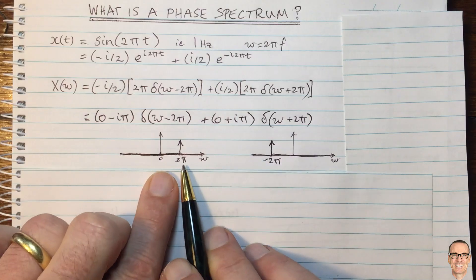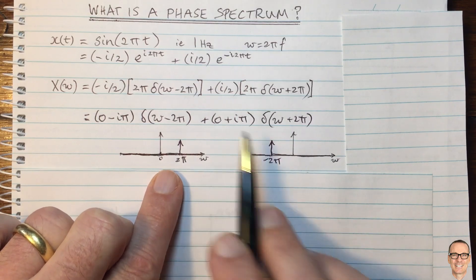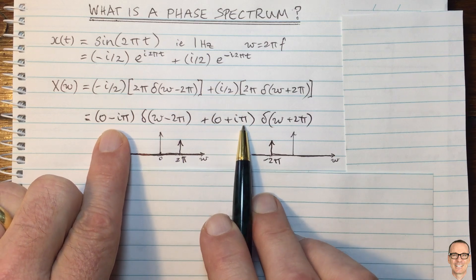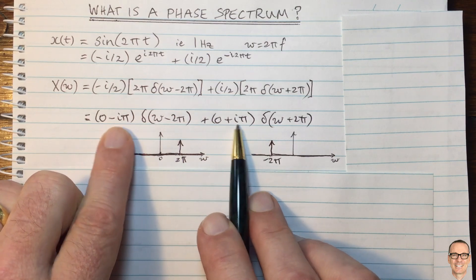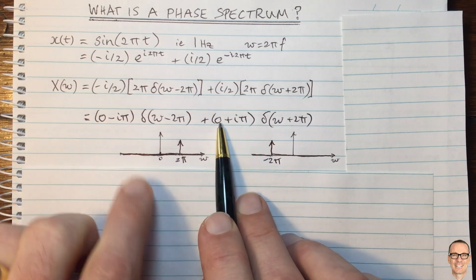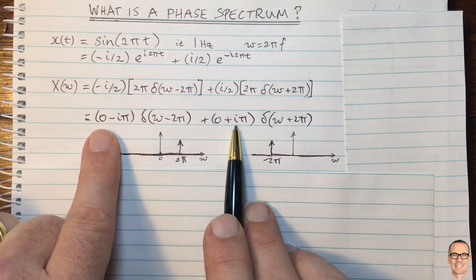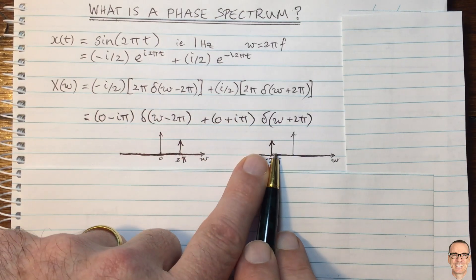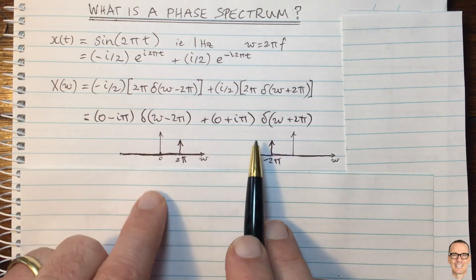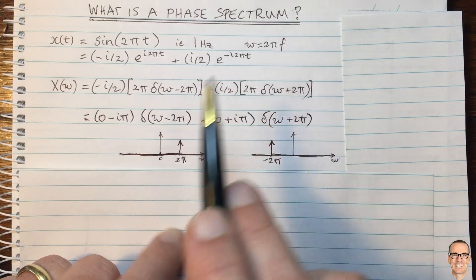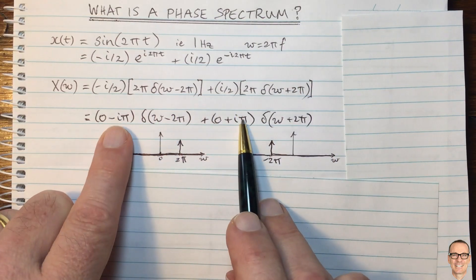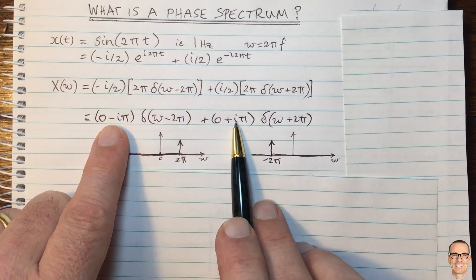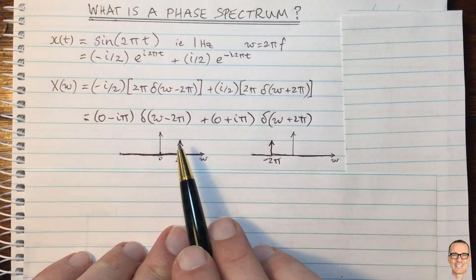Now we have to add these together and get the correct amplitude and phase. For the amplitude spectrum we need the magnitude of these two complex numbers — this one corresponds to this delta, this one corresponds to this delta. And if we want the phase spectrum, we just need the phase of these two things, which may be less familiar to people.